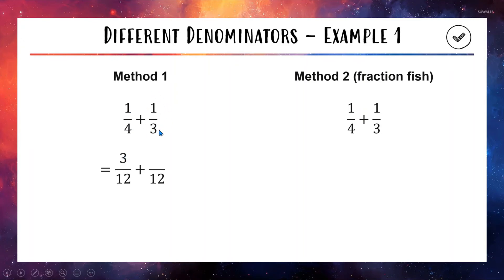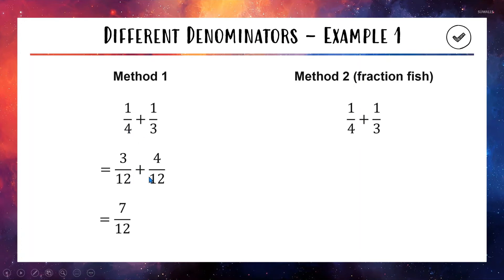Now that the bases match, it's super easy — we keep the denominator as 12 and add the tops: 3 plus 4 is 7, giving us 7 out of 12. The tricky part is rewriting your fractions with the same denominator; after that, you just add the numerators to get your final answer.